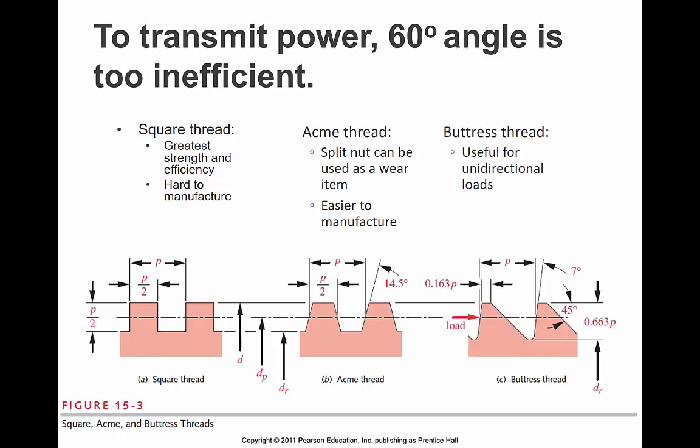The other type of power screw that I'll mention briefly is a buttress thread. If you notice, the buttress thread is somewhat taking the advantage of both the ACME and the square thread. On one direction, it's nearly square. And so it can handle a great deal of load when, we'll call that raising the load, going against the load. So it's useful for unidirectional loads, but it is very inefficient for lowering the load. So it's really only good for moving in one direction.